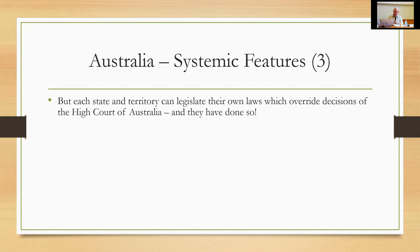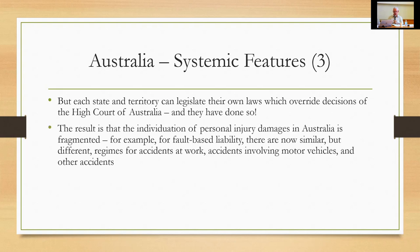Unfortunately, each state and territory can legislate their own laws, which can override the decisions of the High Court of Australia. In the area of tort law — and particularly damages for personal injury — they have done so extensively. For fault-based liability alone, there are now similar but different regimes for accidents at work, accidents involving motor vehicles, and other accidents in every state and territory, giving us 24 different regimes just in that area.